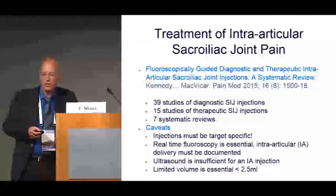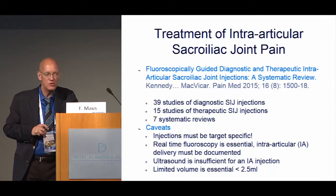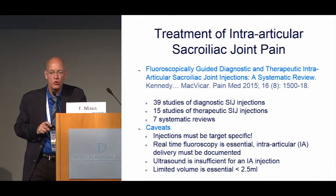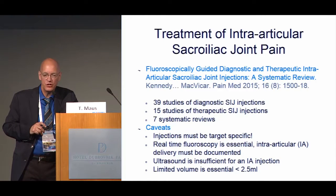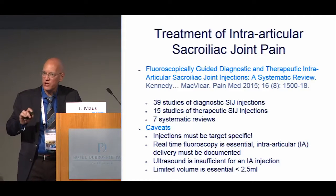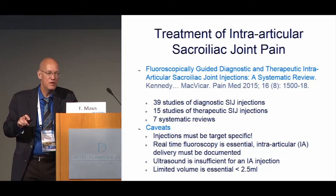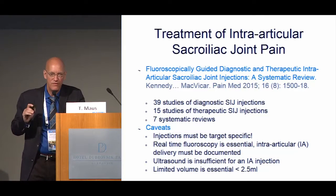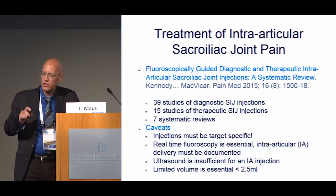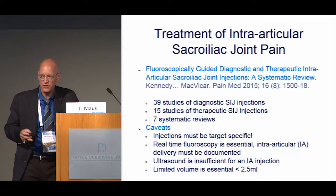How about treating intra-articular sacroiliac joint pain? A systematic review looked at 39 studies of diagnostic SIJ injections, 15 studies of therapeutic SIJ injections, and seven pre-existing systematic reviews. The caveats: the injections must be target specific — they must be in the joint, meaning real-time fluoroscopy. They cannot be done by palpation or ultrasound. If there's no validation that those injections were intra-articular, it's not a useful study. Also note the limited volume — if it's five or six cc's, it's not valid.